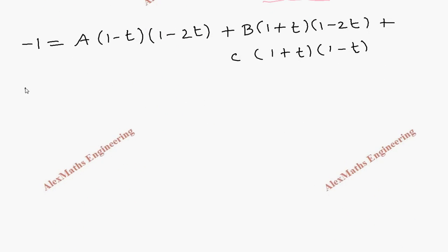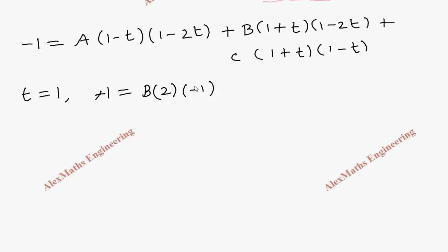Let's take t equal to 1. The A term has a factor (1 minus t), so it becomes 0. For the B term: B into (1 plus 1) into (1 minus 2) equals B into 2 into minus 1. The C term also has a factor (1 minus t), so it becomes 0. We get minus 1 equals minus 2B, and cancelling the two minuses, the value of B is 1/2.